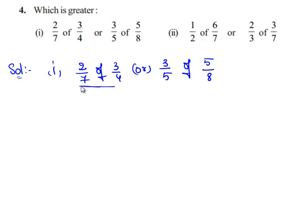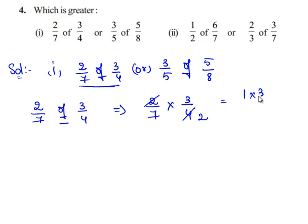So first let us consider 2 by 7 of 3 by 4. The word of is nothing but the multiplication operation, so this can be replaced by a multiplication sign. This implies 2 by 7 multiplied by 3 by 4. Since 2 goes in 4 two times, we have 1 times 3 divided by 7 times 2 which is 3 by 14.